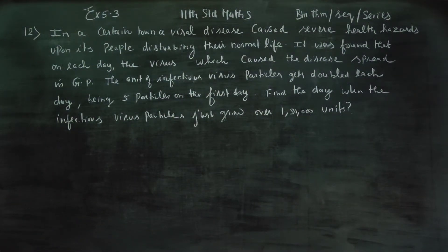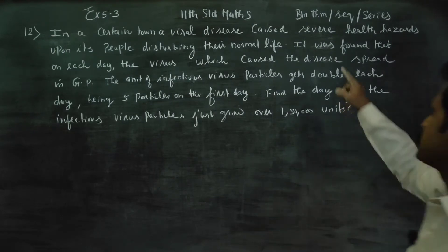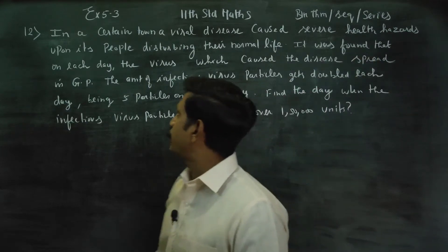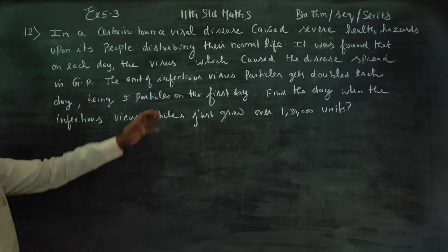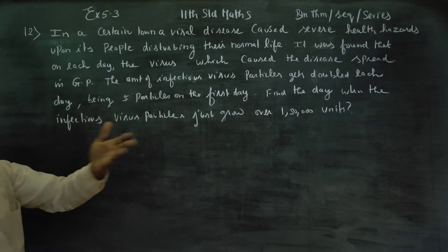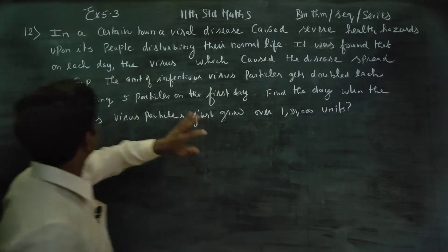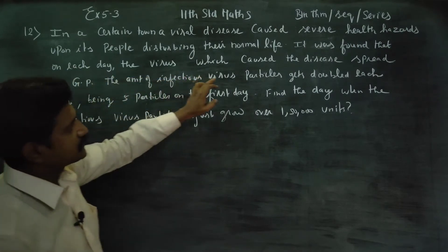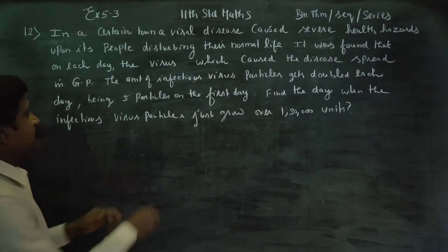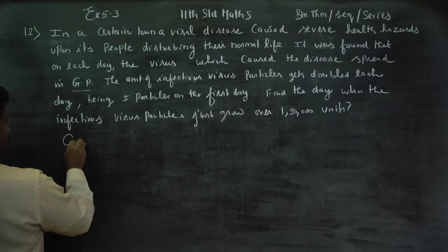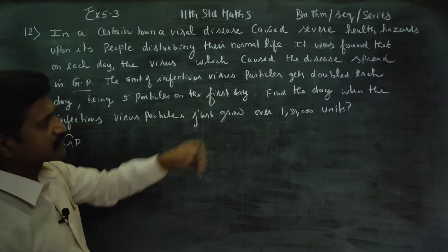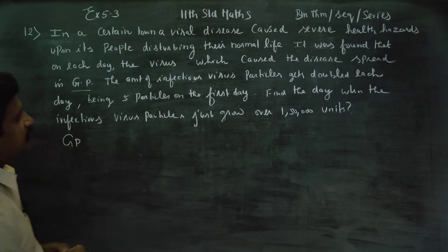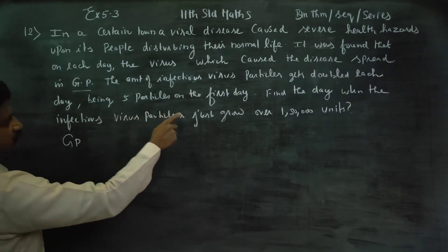Dear Learn Standard students, in exercise number 5.3, sub number 12: in a certain town, a viral disease caused severe health hazards upon its people, disturbing their normal life. It was found that on each day, the virus which caused the disease spread in geometric progression — it is a GP. The amount of infectious virus particles gets doubled each day, being five particles on the first day.